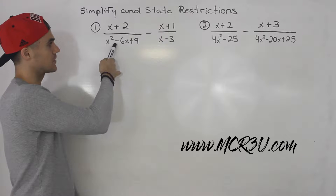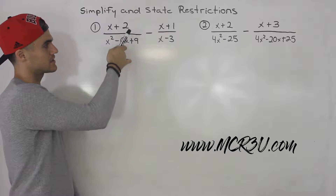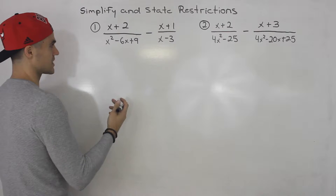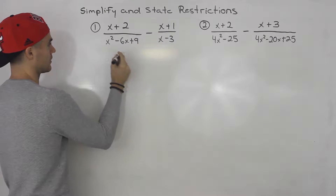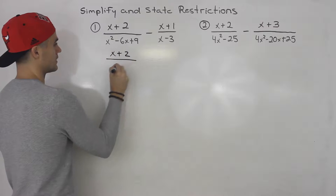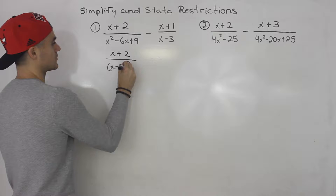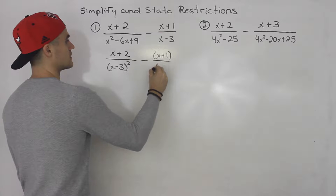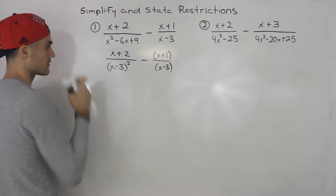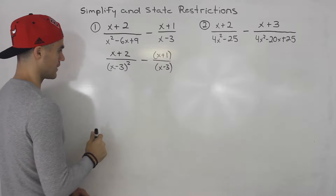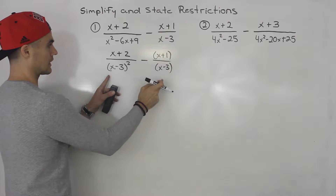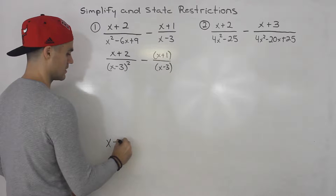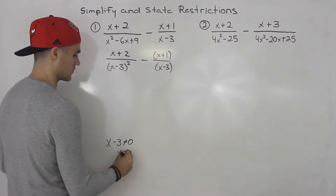Starting off, we have x plus 2 over x squared minus 6x plus 9, minus x plus 1 over x minus 3. First step: factor. Notice this denominator can be factored into x minus 3 times x minus 3, which is x minus 3 squared. And this would be x plus 1 times x minus 3 up here. Get the restrictions before you simplify — the only factor in the denominator is x minus 3, so x minus 3 cannot equal 0, meaning x cannot equal 3.